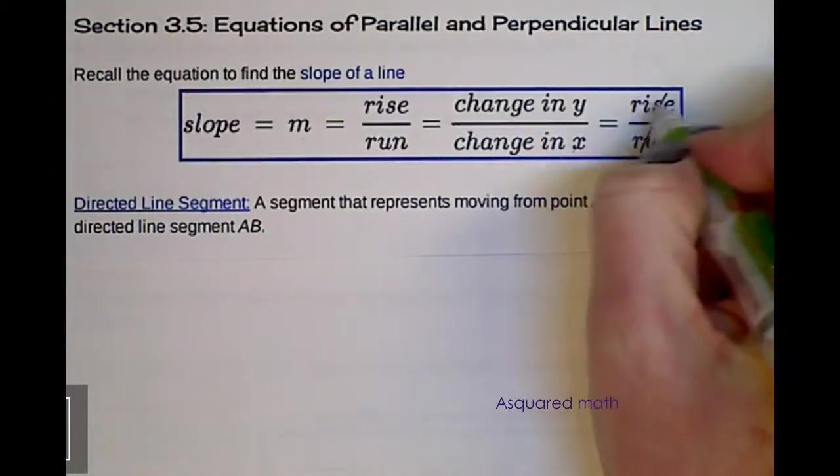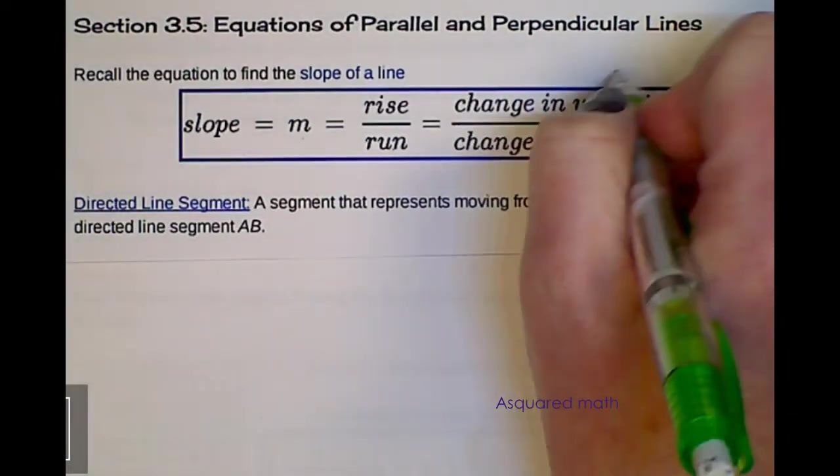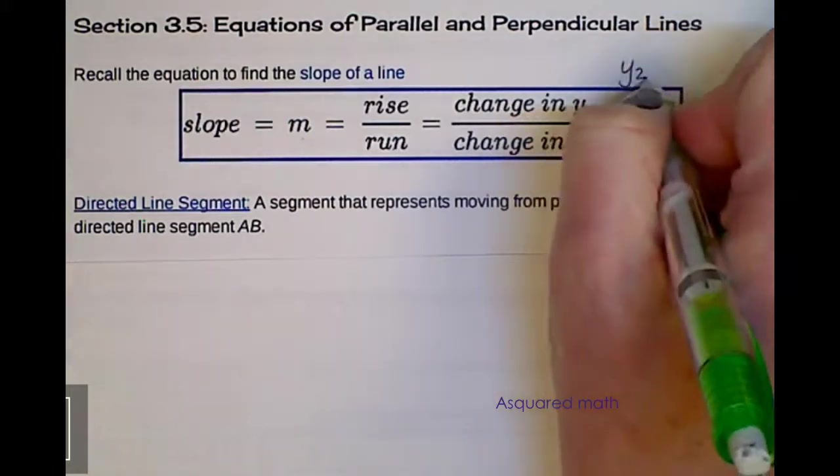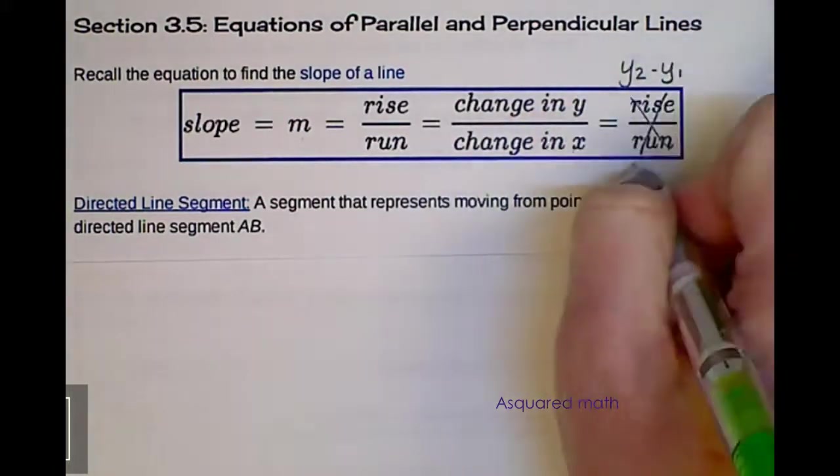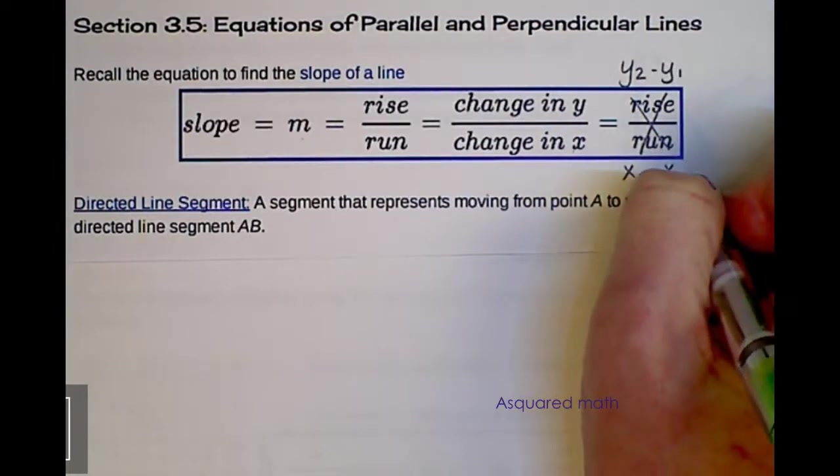I repeated rise over run. I didn't realize that I did that. Or this is supposed to be y2 minus y1 all divided by x2 minus x1.